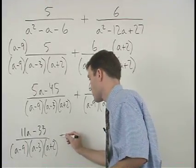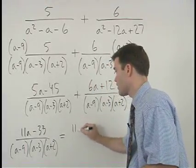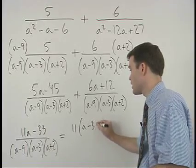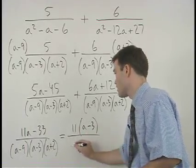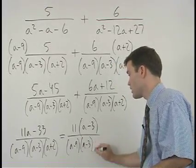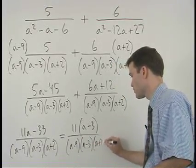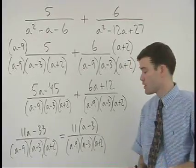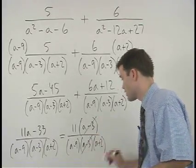So we can factor an 11 out to get 11(a minus 3) over (a minus 9)(a minus 3)(a plus 2). So you can see that our (a minus 3)s cancel.